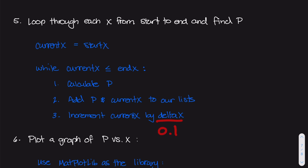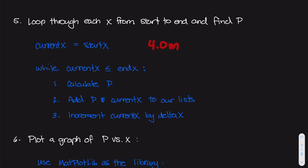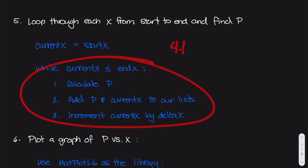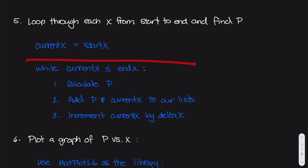Once current_x reaches 4.1 meters, the while loop stops because that condition — current_x less than or equal to end_x — becomes false. For each iteration we're adding P and current_x to those lists defined earlier (P_forces and x_steps).